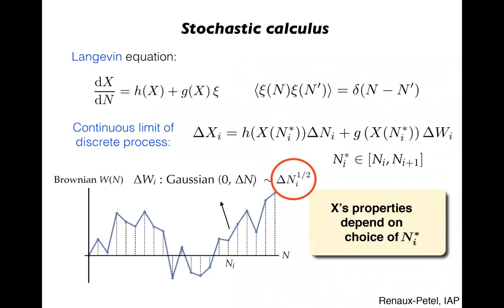To discuss the covariance of the Langevin equations, I have to explain some aspects of stochastic calculus. A stochastic differential equation should really be seen as the continuous limit of a discrete Brownian process, where at each time step the white noise generates an increment of a typical size equal to the square root of the time interval. Because of this, in the continuous limit a stochastic process is not differentiable. Contrary to ordinary differential equations, the continuous limit keeps a memory of the details of the discretization that is used, especially in the situation of so-called multiplicative noise, when the amplitude of the stochastic kick g depends on the stochastic variable x.